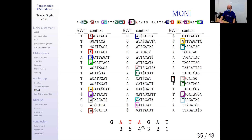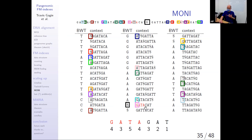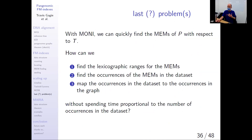You do one more step and have the interval for TAGAT, but when you jumped to the A, you lost the way to find all things starting with TAGAT — so you lose the interval and the count. With MONI, you can quickly find MEMs of pattern P with respect to text T. However, we were stuck: how do we find the lexicographic ranges for the MEMs, the counts? The FM index always starts by finding a lexicographic range, then locating occurrences. We were at WABI, depressed because we weren't figuring this out. Some students took me out for kebabs and we figured it out. The answer: we shouldn't try to find those lexicographic ranges. Don't do this — it's hard and we don't need to.